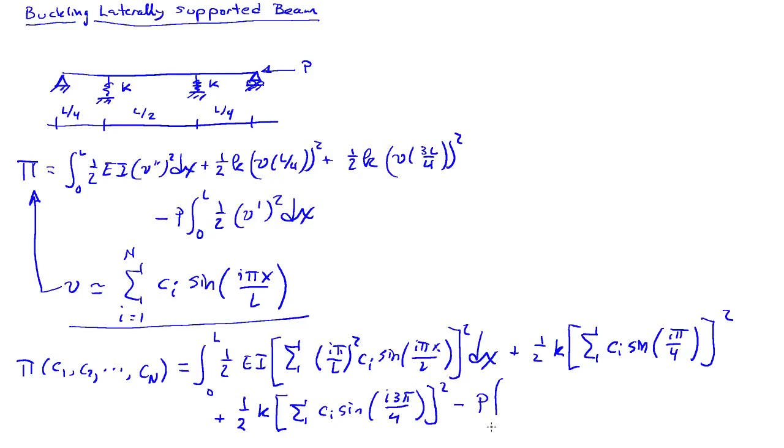So minus P integral zero to L, one-half, and then we have one derivative here. So we'll have the summation again over I, I pi over L, times CI times the cosine of I pi x over L. So that's my total potential energy in my system. To get the equilibrium equations, I'm going to take the derivative with respect to each C, so C1, C2, C3, all the way to Cn, and that will generate a set of equilibrium equations.